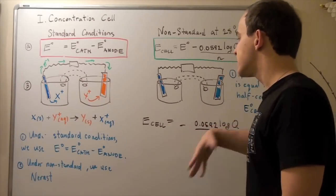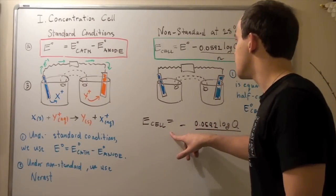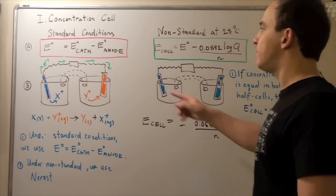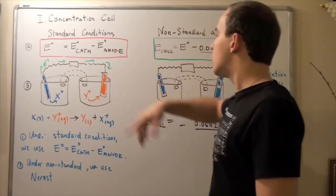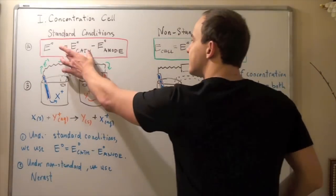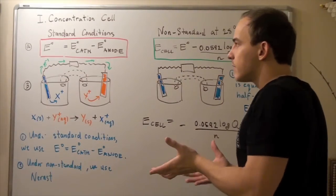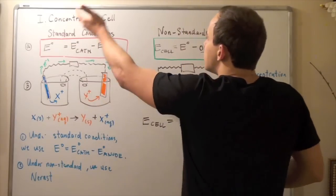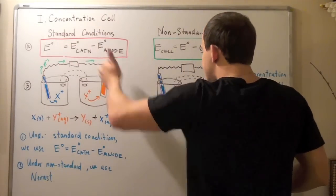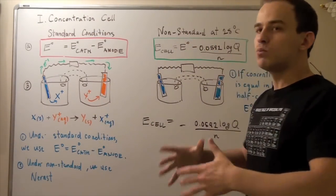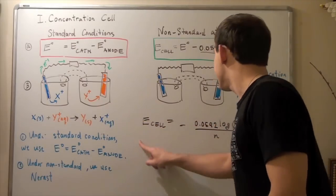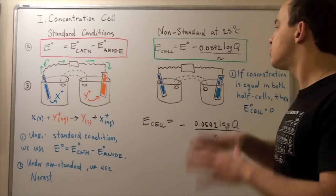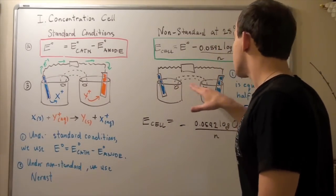What is the cell voltage for a concentration cell? Well, our E of the cell is equal to zero for the standard cell voltage, because if we look up the values on the table, both half-cells use the same metal, so we subtract X minus X, which gives zero. What we are left with is the Nernst equation term alone, meaning the cell voltage depends strictly on the concentrations of our solutions.